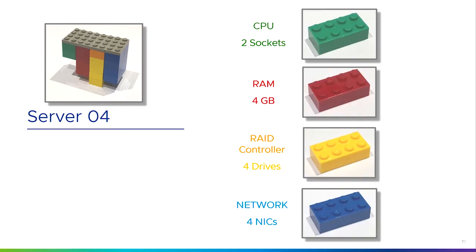Server four is slightly different again: two CPUs, four gigs of RAM. The dark orange block is a RAID controller, so we've got a RAID controller and four drives, and four network cards. We'll talk about RAID controllers in another video — it's just a device that helps combine hard drives or solid state drives together to make a more reliable or higher-performing drive.